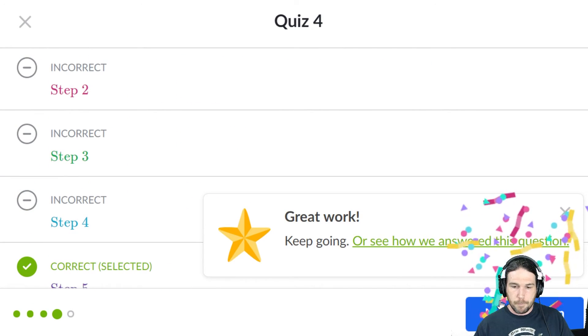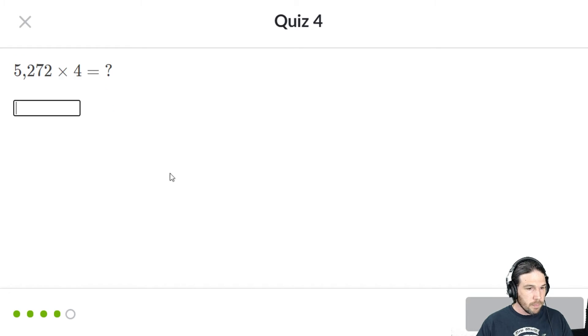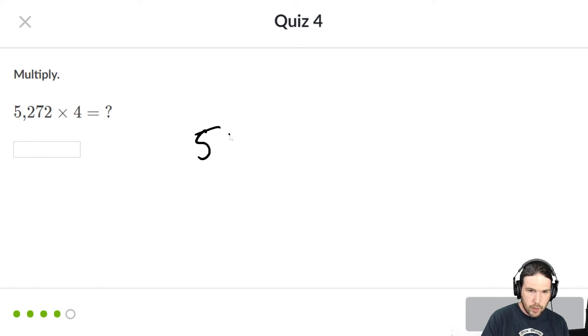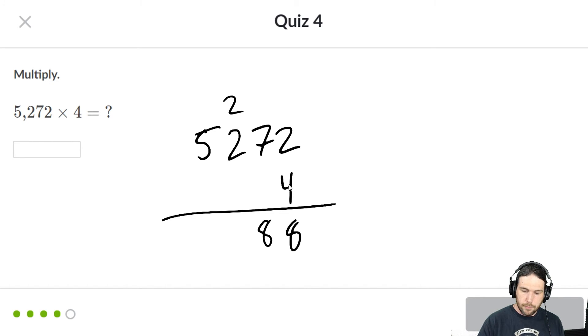Step 5, 5,272 times 4. They're going to end this quiz with a nasty one. Fine. We're going to do this one traditional way. 4 times 2 is 8. 4 times 7 is 28. The 2 goes over here. 4 times 2 is 8, and 2 is 10. 21,088.